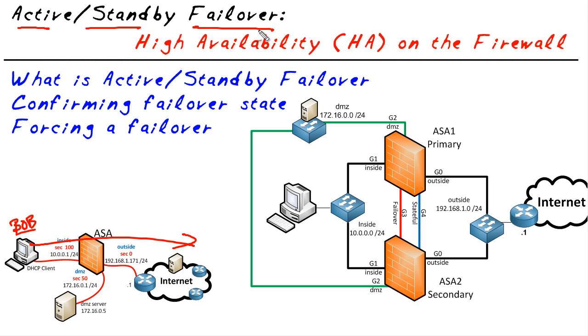The ingredients for Active Standby Failover: you need two firewalls. So why buy one when you can buy two at twice the price? You get two firewalls, and you configure one as primary and one as secondary.